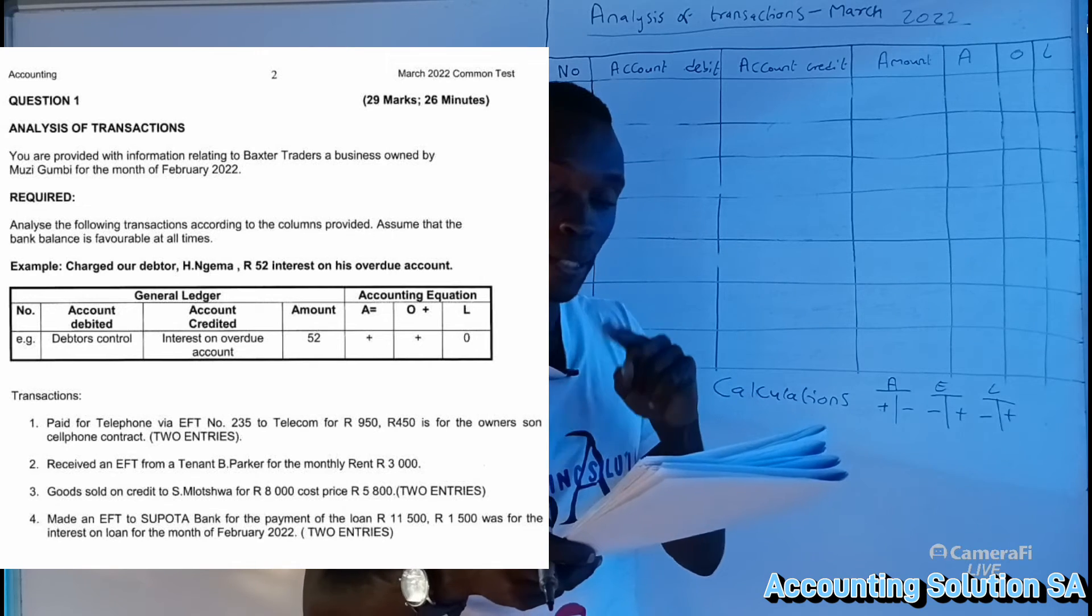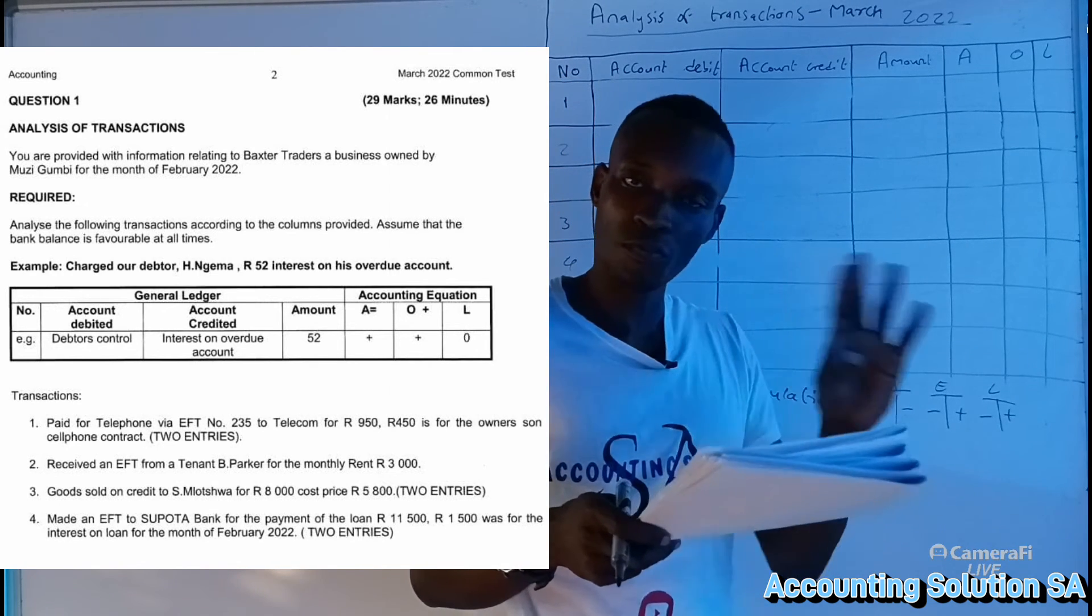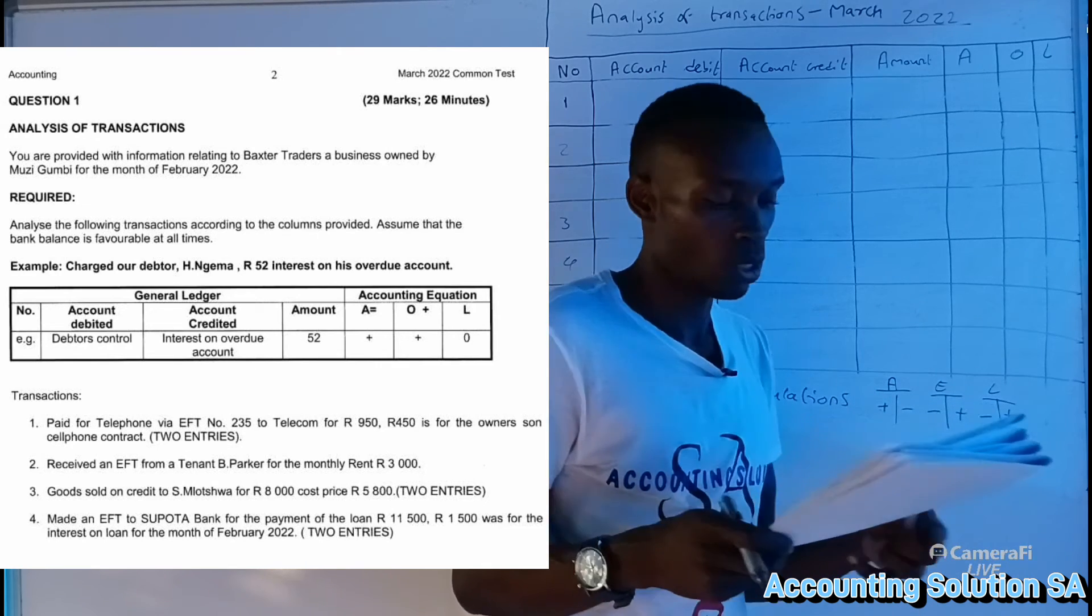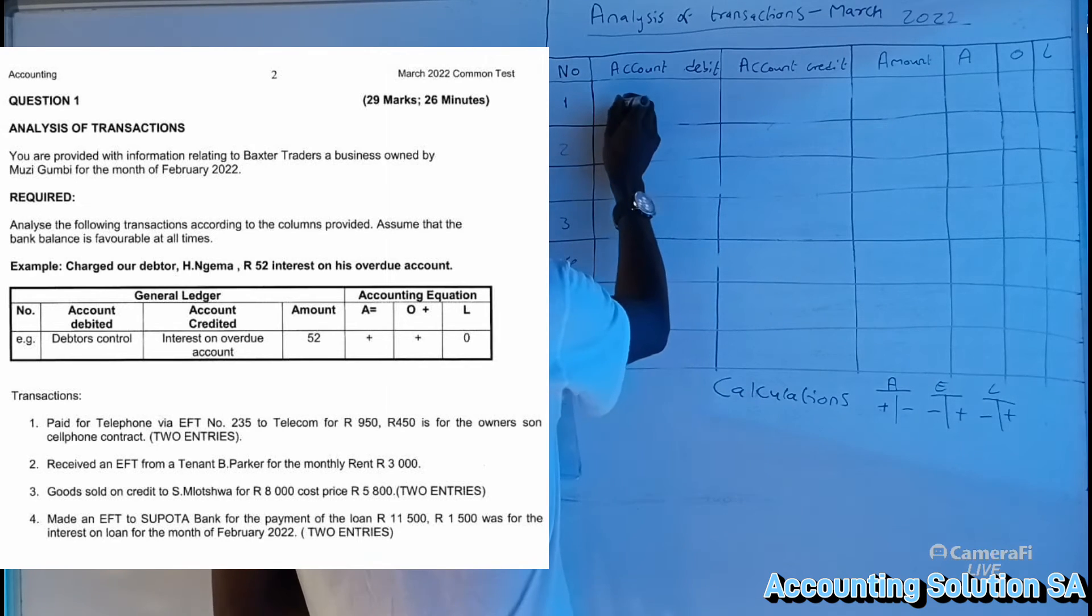A business paid a telephone of 950 rand, but the other one is for business and the other one is for personal use, which we call it drawings. For the owner's son is not for business, it's for personal use. Let's start with the one for business. For business we are going to debit a telephone.